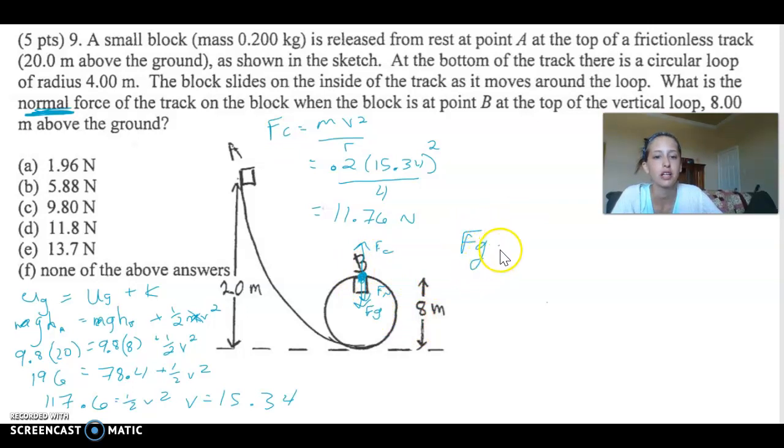So Fg, that's mass times gravity when we're near the surface of the earth. The mass is 0.2, g is 9.8. So just gravity, it's 1.96. Also a tempting wrong answer choice.